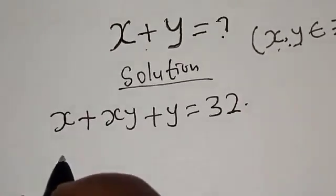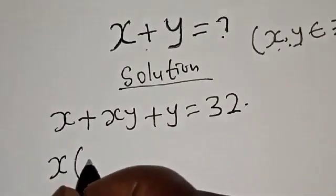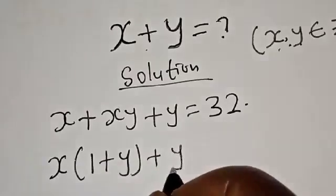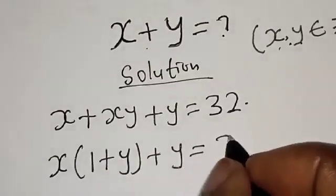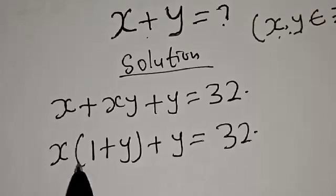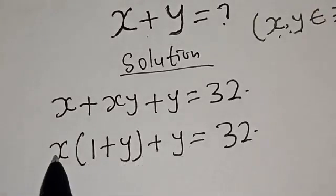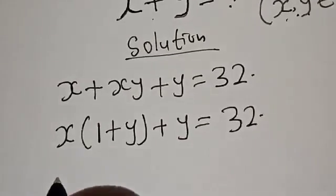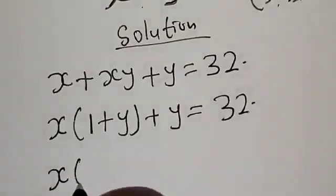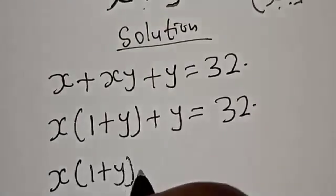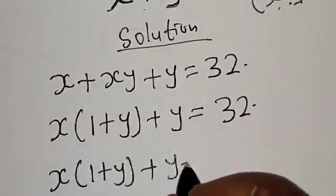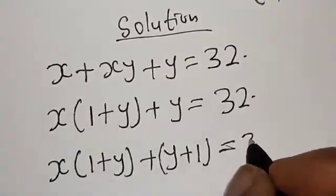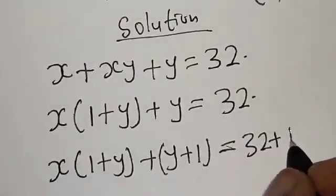Let's factor x out. We have x times (1 plus y) plus y is equal to 32. Now here we have (1 plus y) and here is y, with x outside. We can add 1 to both sides: x times (1 plus y) plus y plus 1 is equal to 32 plus 1.